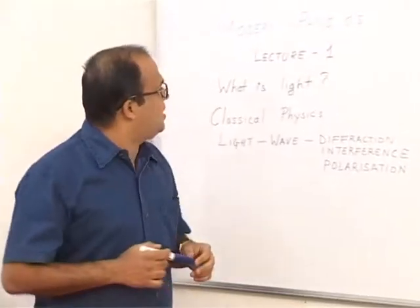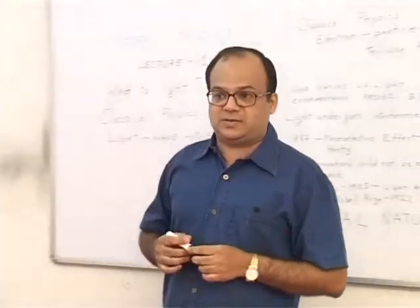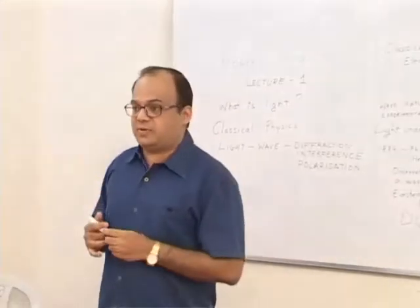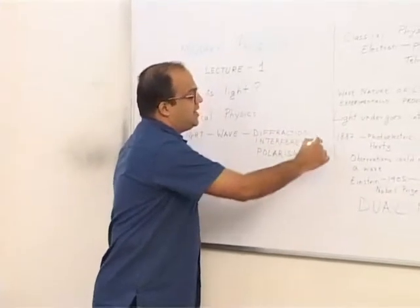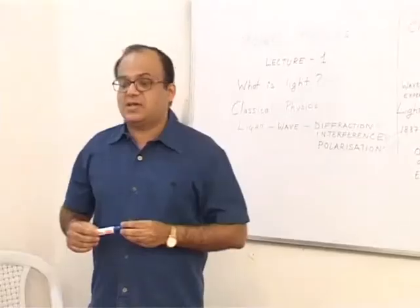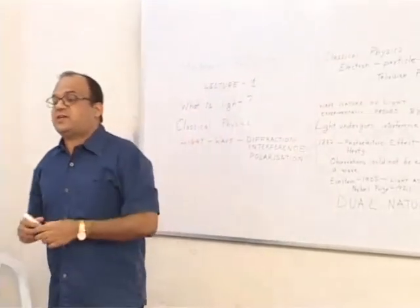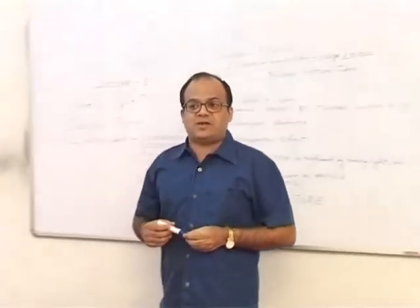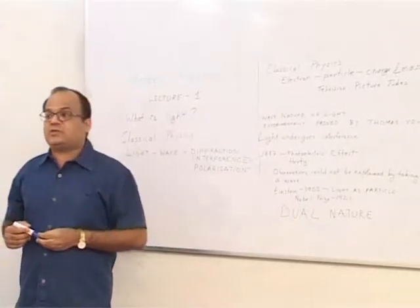Today we are going to start our discussion on modern physics. First, let us try to understand what is light. In classical physics, light is treated as a wave because of diffraction, interference, and polarization. Electrons are treated as particles because they have charge and mass, and they behave like particles in devices like television picture tubes.